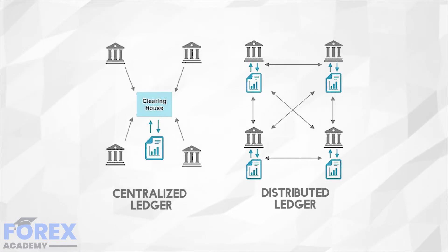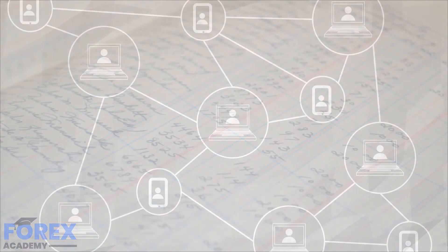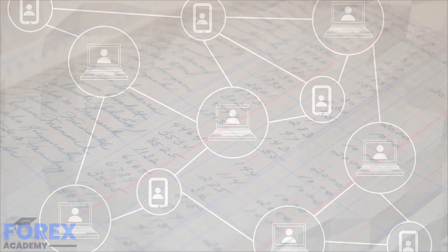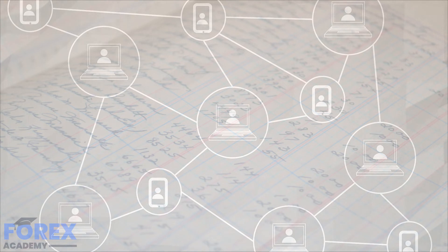Distributed ledger technology dramatically reduces the cost of trust. With that being said, distributed ledger technology may sound just like blockchain, but it's not. DLT offers the implementer more control over how it is implemented. While DLT is technologically decentralized and relies on similar consensus guidelines as blockchain, it offers its owner the ability to dictate the structure, purpose, and function. This technology can be considered the first step towards blockchain, but it won't necessarily make a chain of blocks.